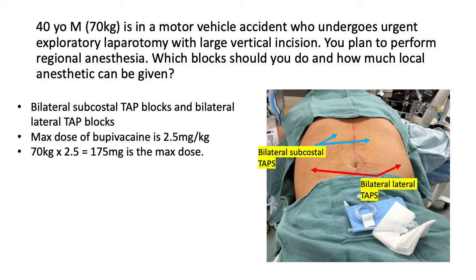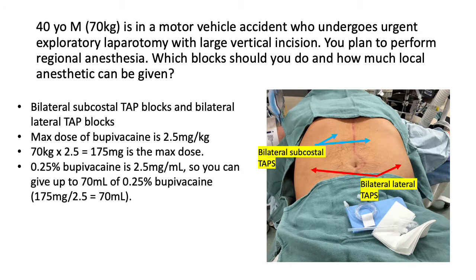To calculate how much volume of local you can give — say you're giving 0.25% bupivacaine — that equates to 2.5 milligrams per mL. So you can give up to 70 milliliters of 0.25% bupivacaine. You get that by dividing the max dose of 175 milligrams by the concentration of 0.25% bupivacaine, which gives you 70 milliliters total volume for this patient.